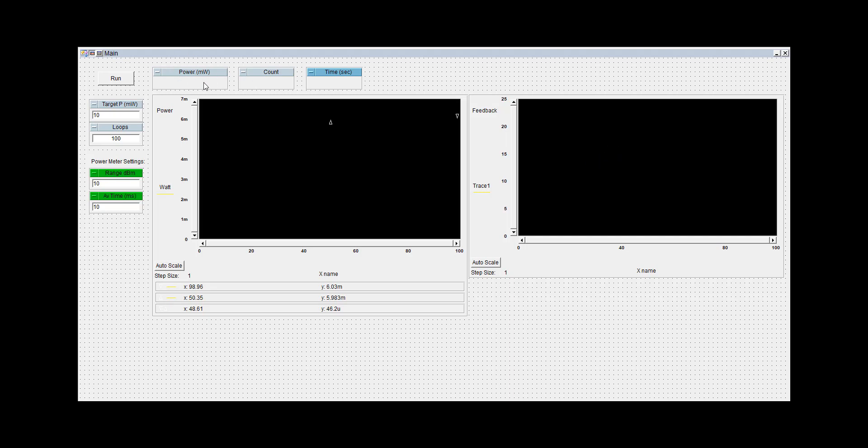We'll also display the instantaneous power reading from the power meter, as well as the loop count and the elapsed time. The tunable laser has been set to a power that will give us about 6 milliwatts at the power meter